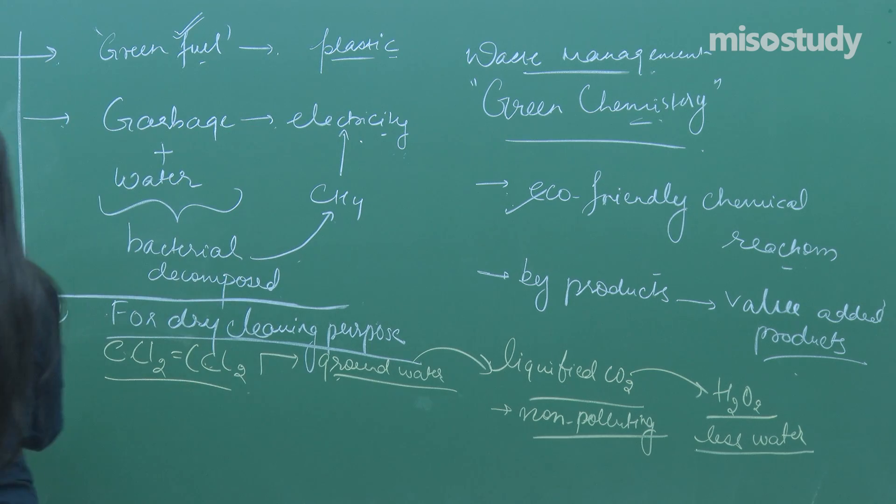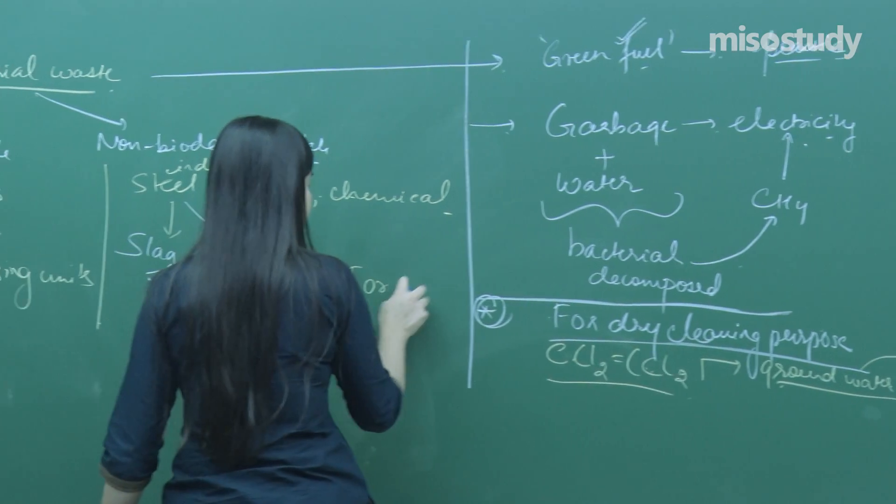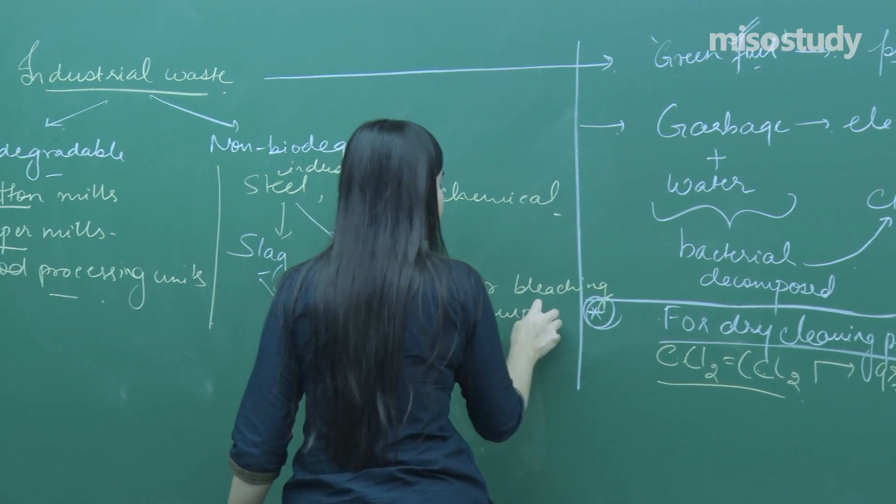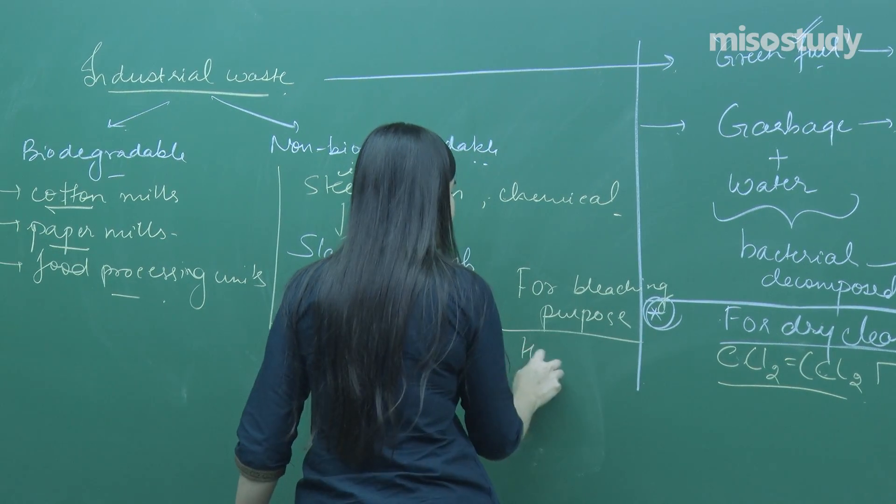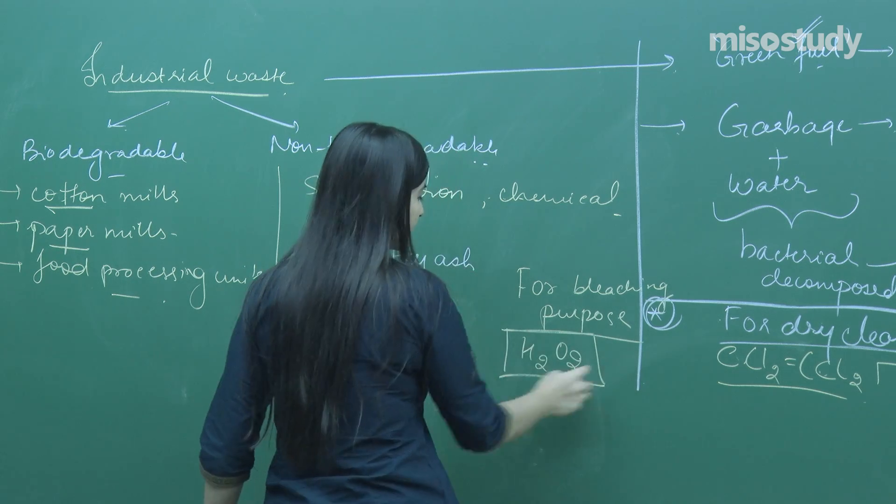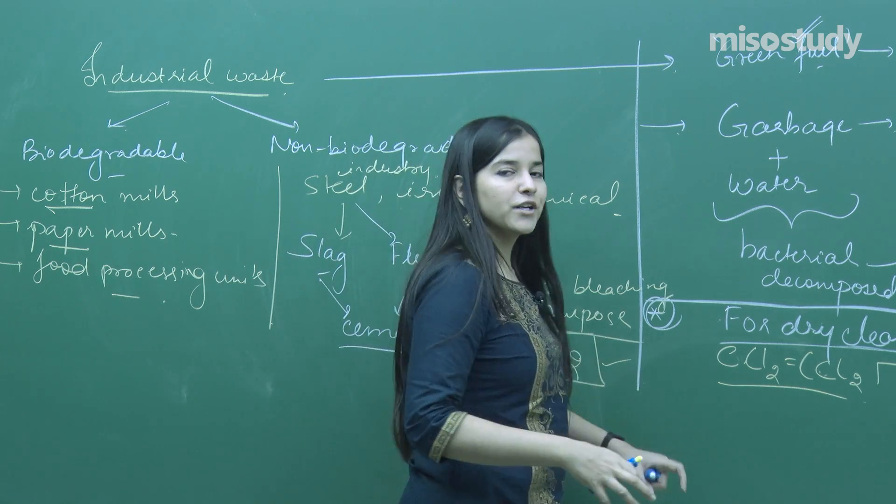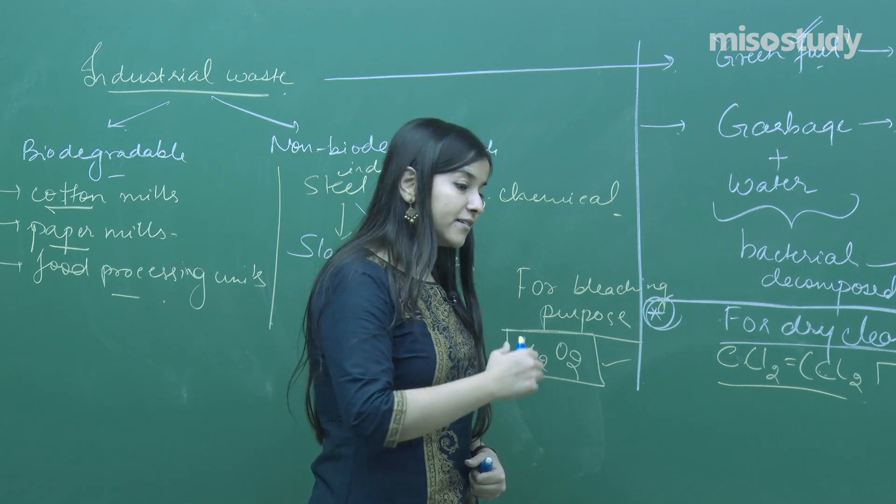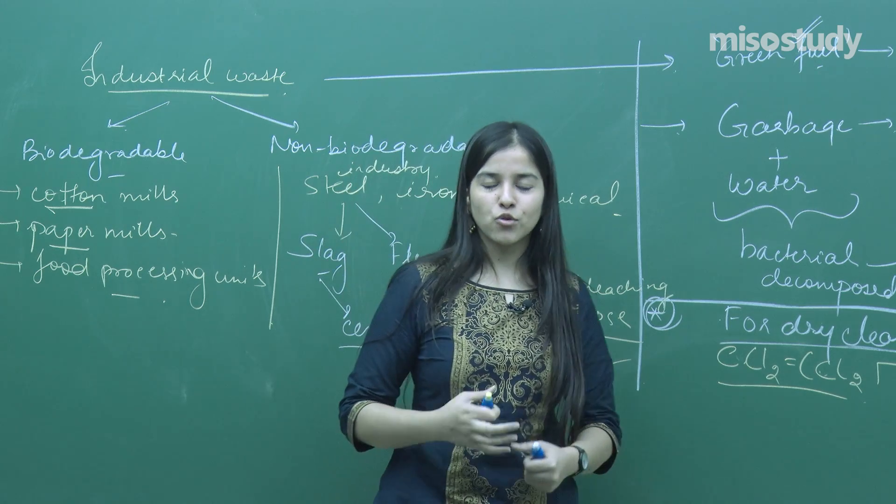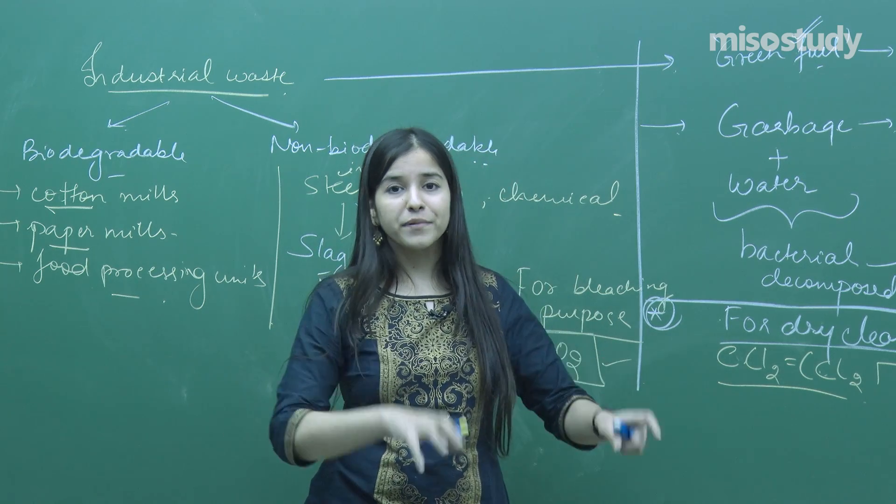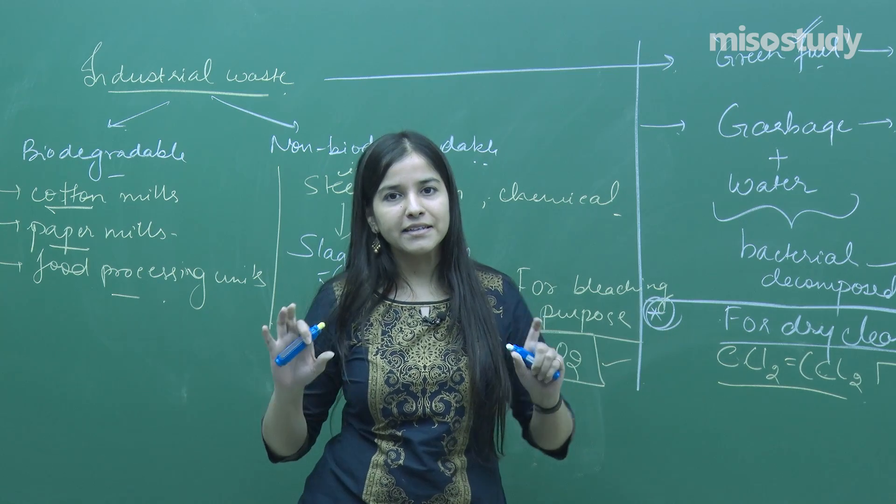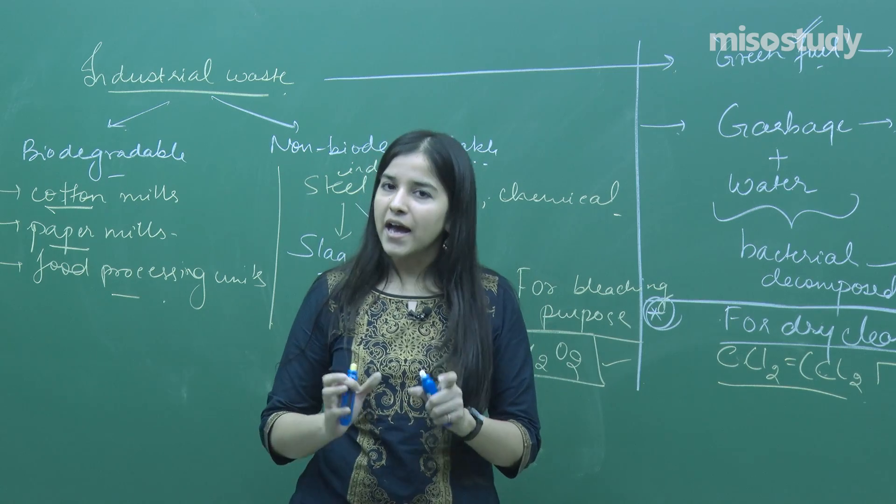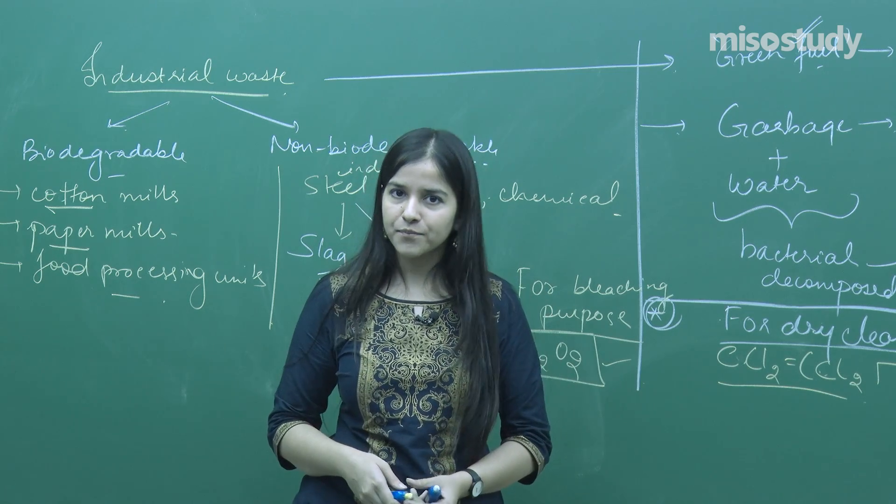For bleaching purposes, hydrogen peroxide is employed. Being eco-friendly, it utilizes less water and gives results quickly. Scientists are researching different reactions to employ better ways that are eco-friendly, consume less chemicals, and are cost-effective.